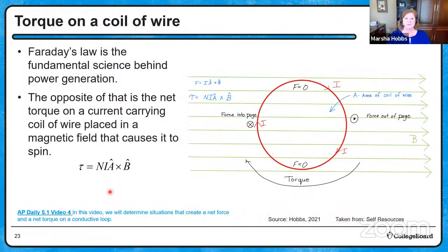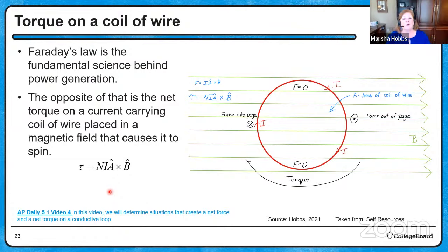We also need to look at the relationship between motors and generators. A motor is due to torque on a coil. With the magnetic field pointing to the right, on the left-hand side of the coil the current is going up, giving a force into the page; on the right-hand side the current goes down, giving a force out of the page. The force is zero at the top and bottom. The net torque turns out to be the number of turns times the current times the area cross product with the magnetic field.